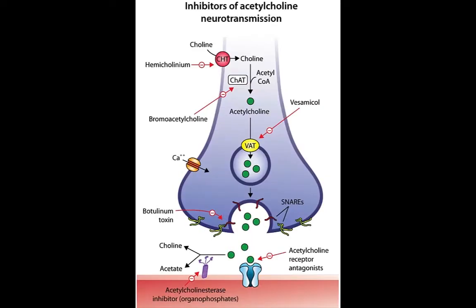Acetylcholine is the neurotransmitter for the neuromuscular junction and in many other neuronal transmissions in central and autonomic neurons. Understanding inhibitors of its effect, synthesis, and release helps in understanding the secondary effects of drugs that stimulate or inhibit its action.